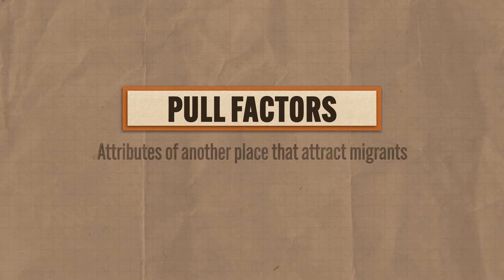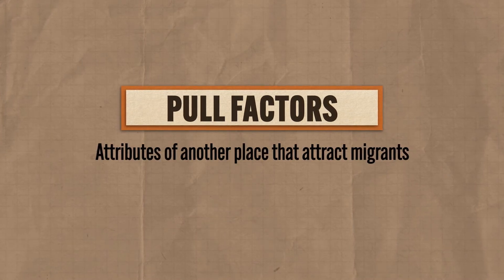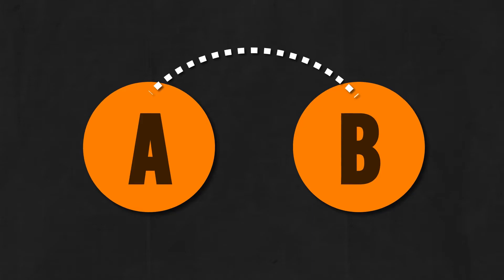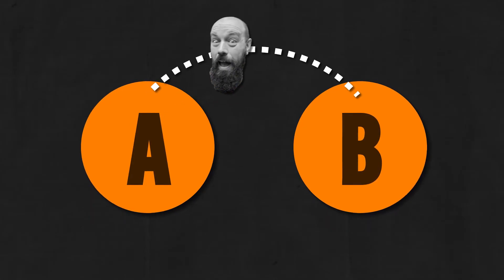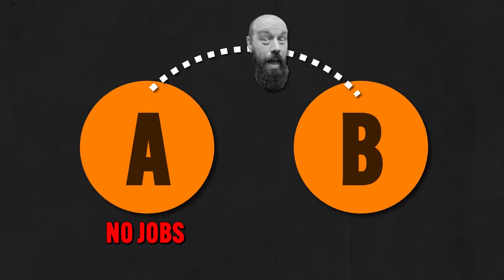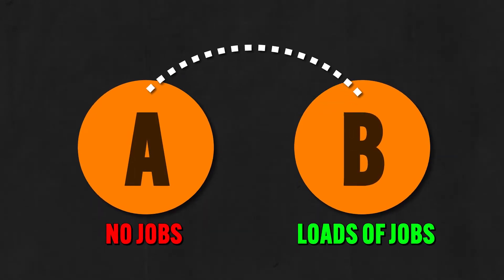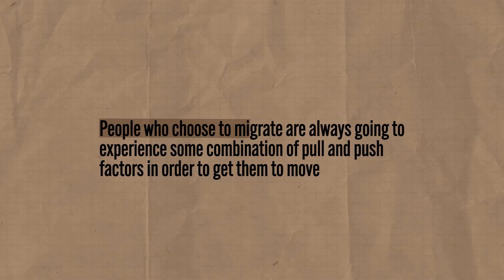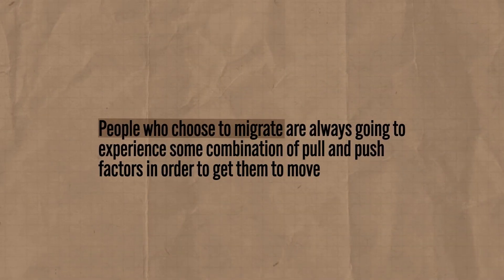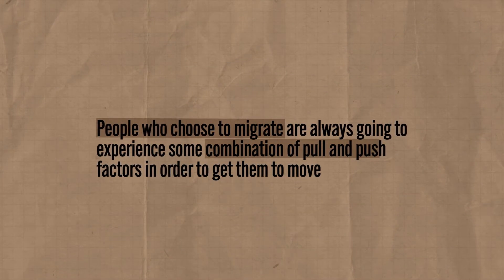Second are pull factors, which refer to attributes of another place that attract migrants. Maybe there aren't enough jobs in country A, but country B has loads of them, and that might pull you to relocate there. Pull factors can also include the desire for freedom under a stable government. Push and pull factors rarely occur in isolation — people who migrate always experience some combination of both.